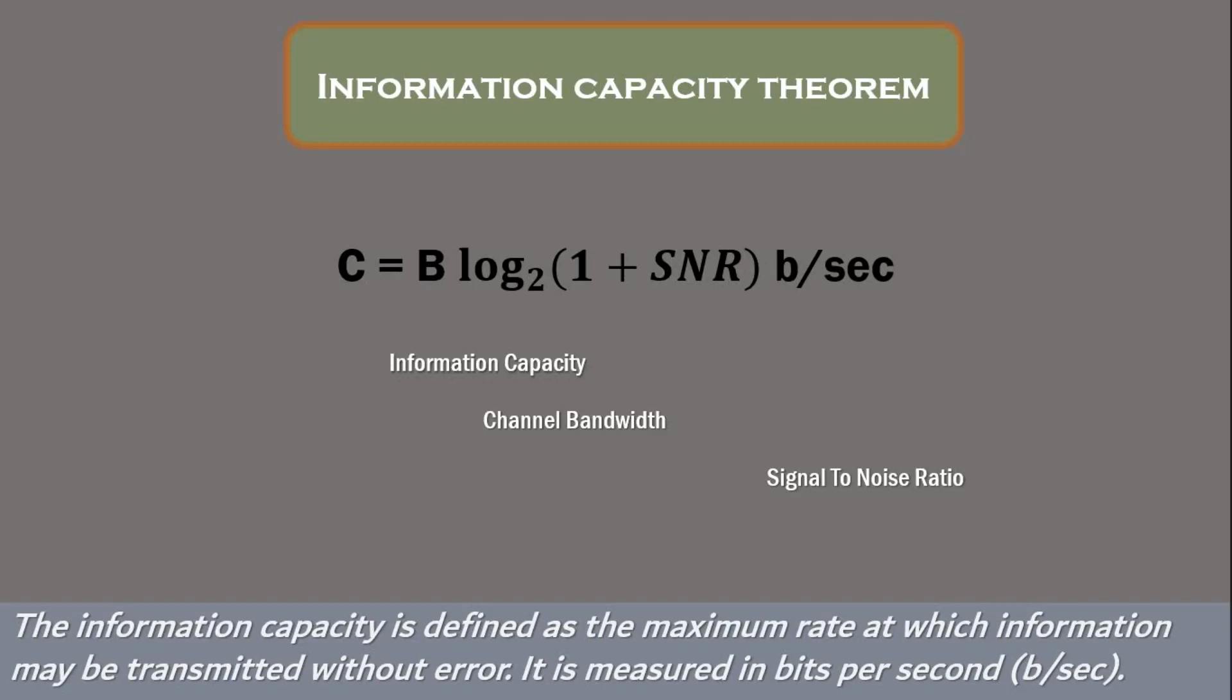According to information capacity theorem, channel bandwidth and signal-to-noise ratio are exchangeable. This equation represents information capacity theorem. Where c is information capacity. The information capacity is defined as the maximum rate at which information may be transmitted without any error. It is measured in bits per second.